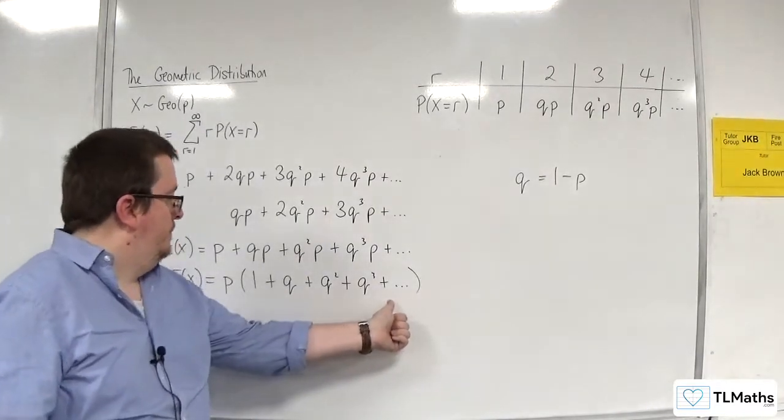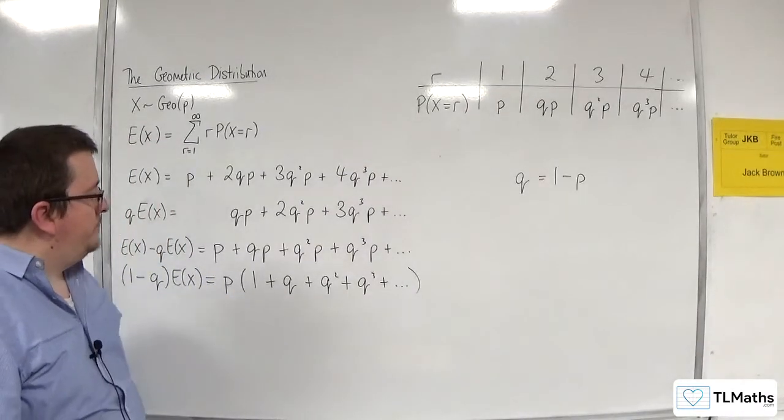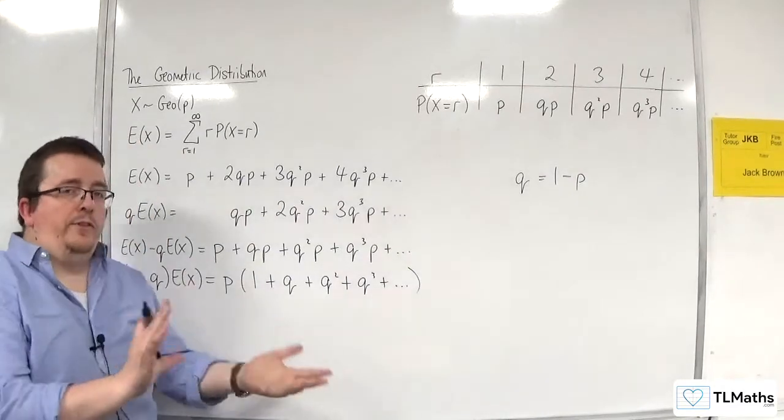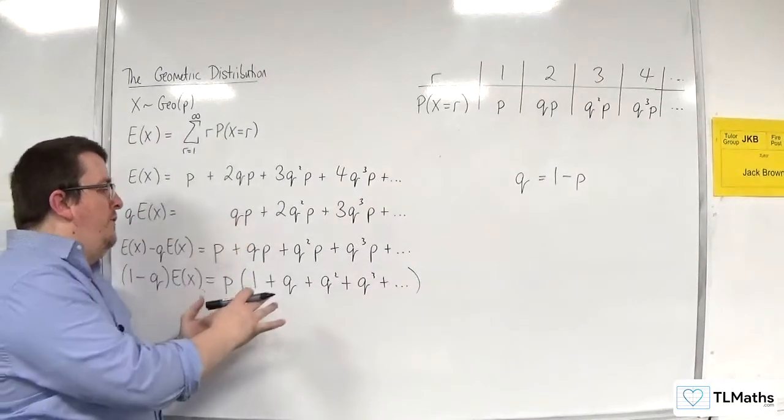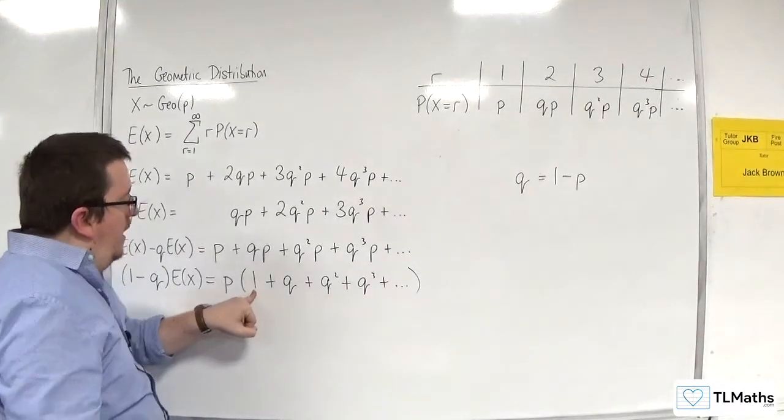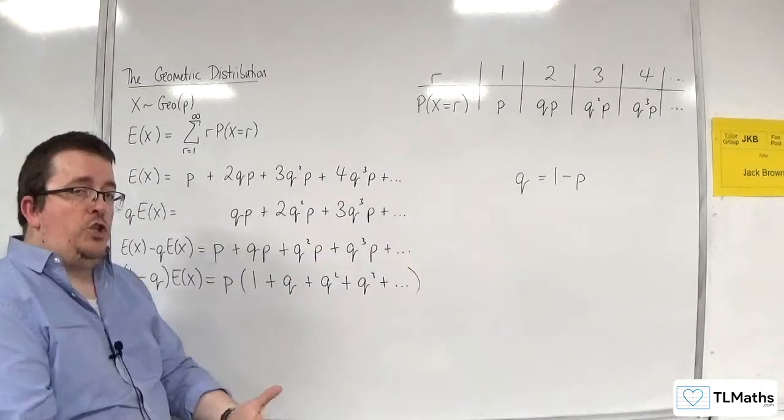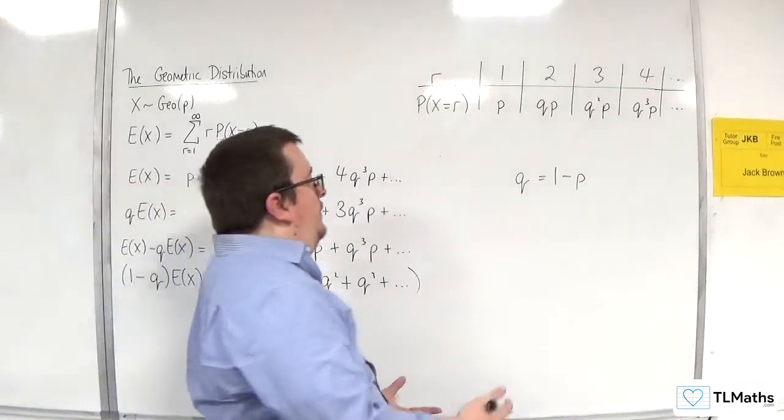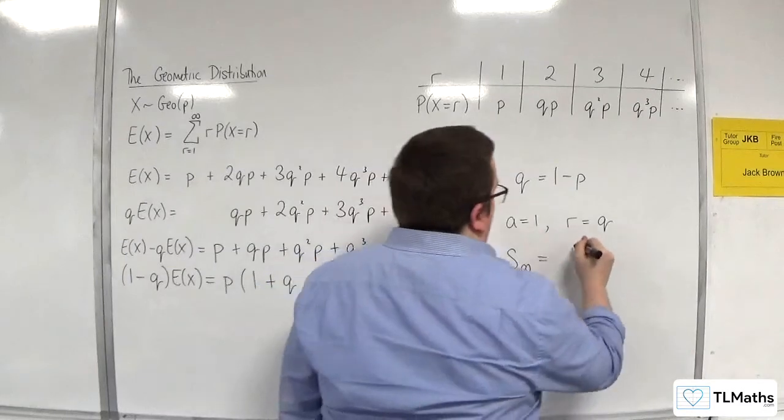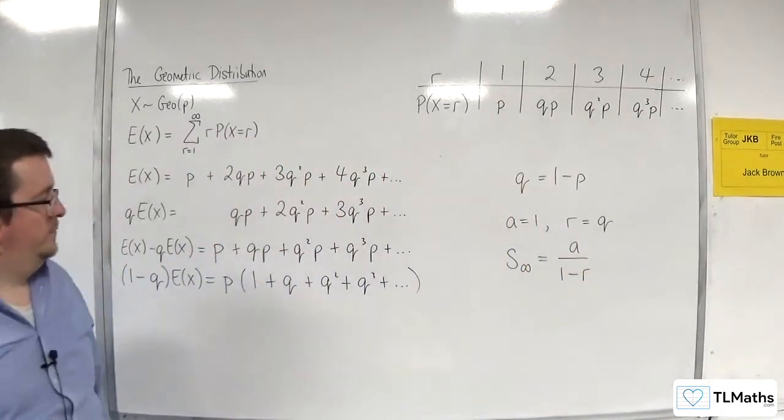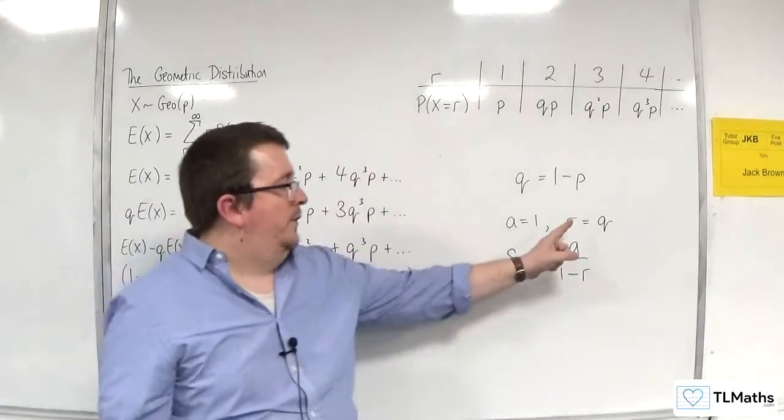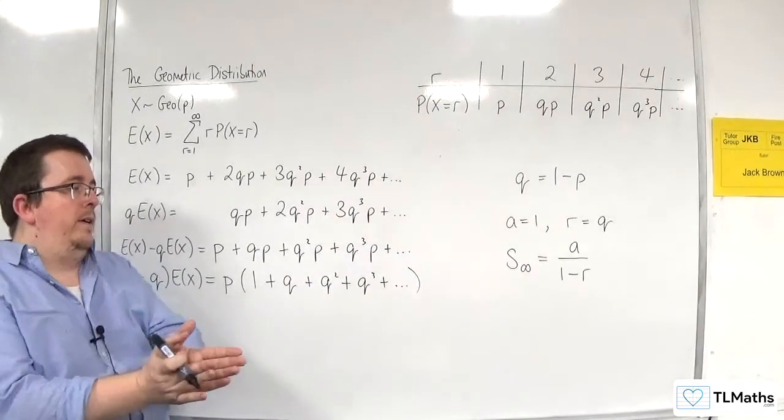Now, focus your attention on this: 1 plus q, plus q squared, plus q cubed, etc. Now, q, being 1 minus p, will always be a value between 0 and 1. So, what we've got is an infinite geometric series, because I'm multiplying by q each time. I'm starting at 1, so a is 1. And because I'm multiplying by q each time, my common ratio is q. So, a is 1, r is q. And I have a summing to infinity formula: a over (1 - r). Now, I can use this formula, because as I said, q is going to be a value between 0 and 1, so that fits the bill. Because remember, the modulus of r has got to be less than 1 in order for us to have a sum to infinity.